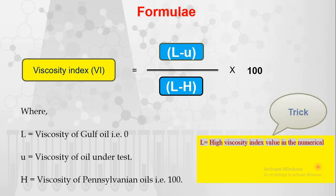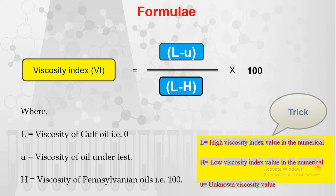Whatever the high value in the numerical, it is considered as L. Then H is the lowest value in the numerical. And U is of course the unknown viscosity value given in the numerical. If you follow this trick, this problem becomes very easy.